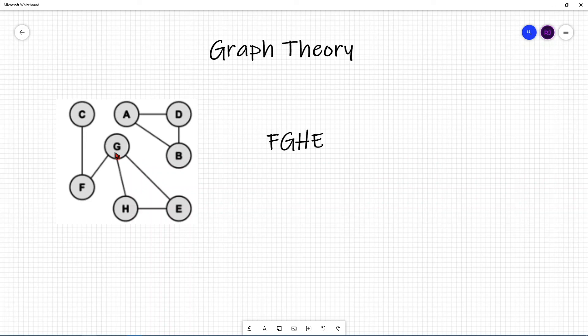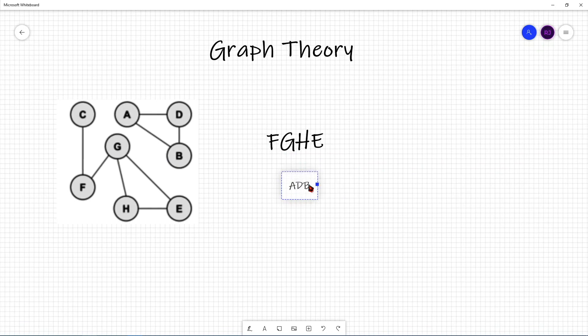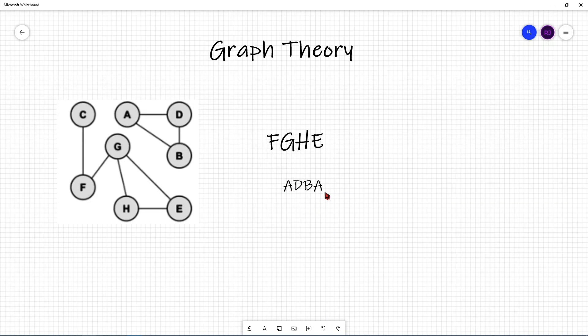A cycle is a special type of path, which is a simple path except the first and last vertex are the same. For example, a path in this graph would be from ADBA. A cycle is basically a circle, so from A to D, from D to B, and B to A. You can see that the only vertex that repeats in our example is the first vertex, which is also seen as the last vertex.